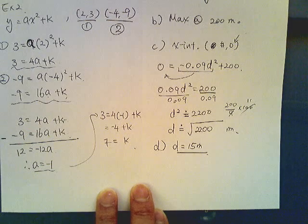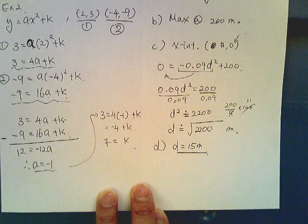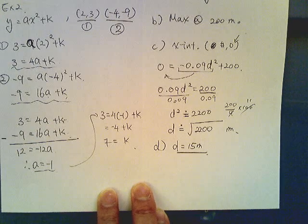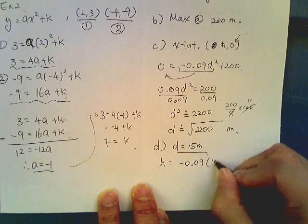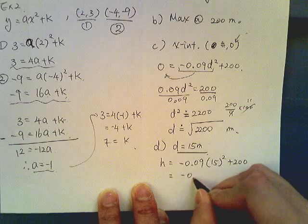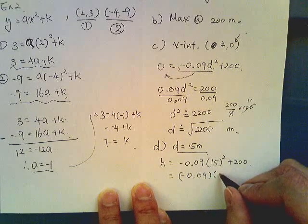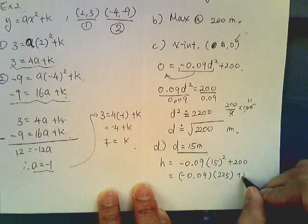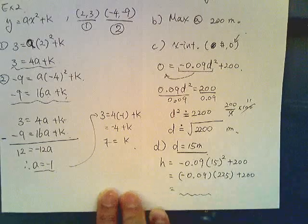It says at the horizontal distance of 15 meters, horizontal distance, well that is represented by d. So d here is the 15 meters. Plug that in, so then h equals negative 0.09, 15 squared plus 200. I believe you get this correctly. Now 15 squared is 225 plus 200. Well, you can find this value on your own.